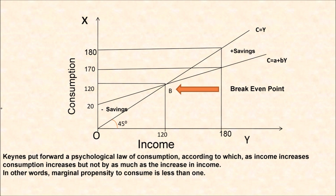As income increases from 120 to 180, consumption also increases, but at this point people are spending less than their income level. Out of 180, they are spending 170, meaning they are able to save 10 rupees out of their income, which becomes their savings.